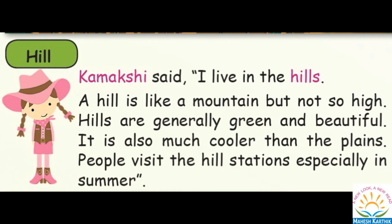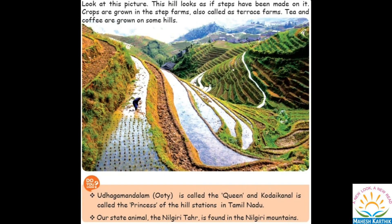Now look at this picture. This hill looks as if steps have been made on it. Crops are grown in step forms, also called terrace farms. Tea and coffee are grown on some hills. Udhagamandalam (Ooty) is called the queen and Kodaikanal is called the princess of hill stations in Tamil Nadu. Our state animal, the Nilgiri tahr, is found in the Nilgiri mountains.